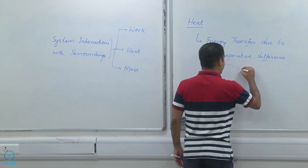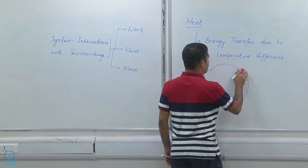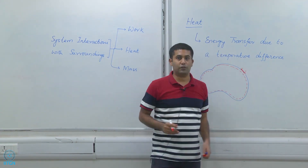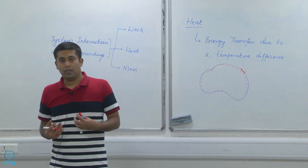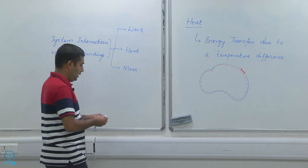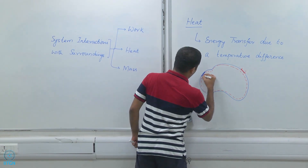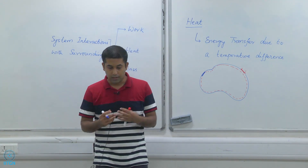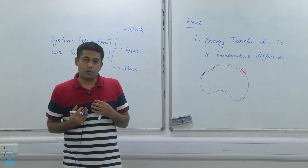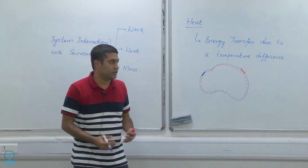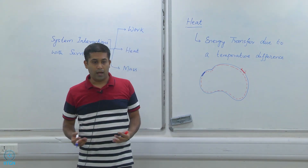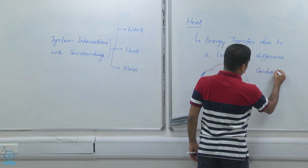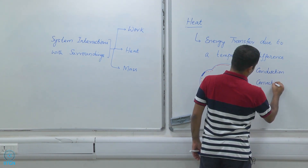For example, if this boundary is at a temperature that is hotter than the system, then there will be an energy transfer from this hot surface to the system, and that energy transfer is heat. Similarly, if a portion of the boundary is colder than the system itself, then there is energy transfer from the system to the surroundings at that point. Whenever energy crosses a system boundary because of a temperature difference, we have heat — that is heat interaction. Heat interaction can take place via three modes: conduction, convection, and radiation.